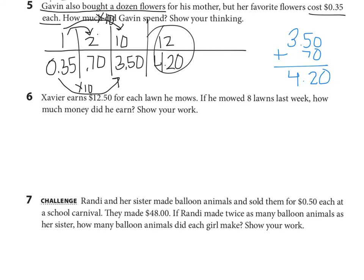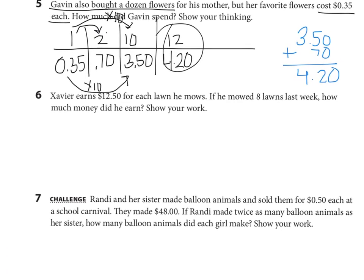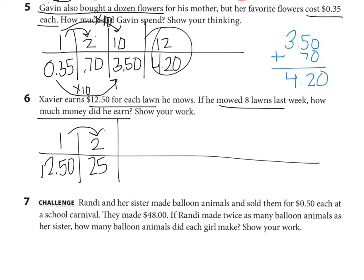Let's look at number 6. Xavier earns $12.50 for each lawn he mows. If he mowed 8 lawns last week, how much money did he earn? Show your work. So $12.50 for each lawn. He mowed 8 lawns. How much money did he earn in total? So again, we have 1 costs $12.50. I want to find the cost of 8. Double that would be $25. Double that would be $50. Double that again would be $100. Wow. He mowed 8 lawns and he earned $100. Not bad.